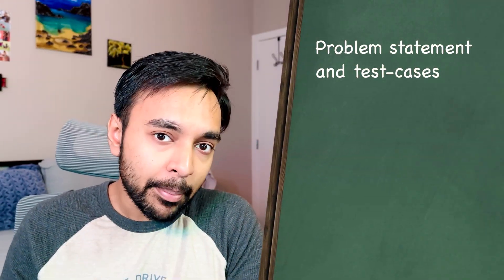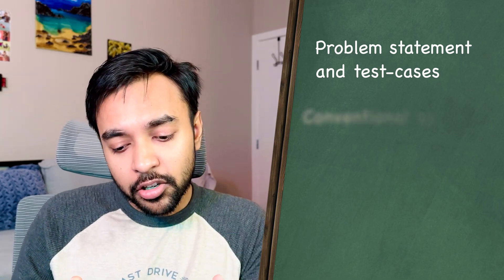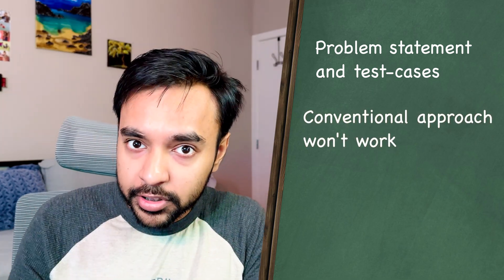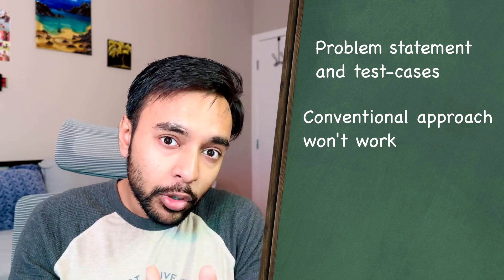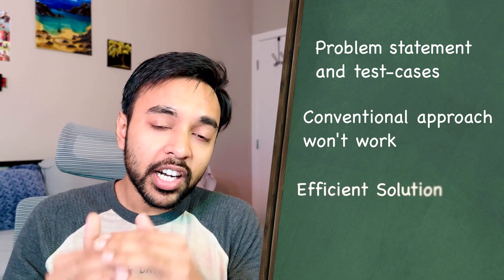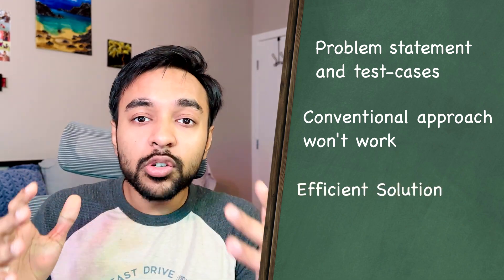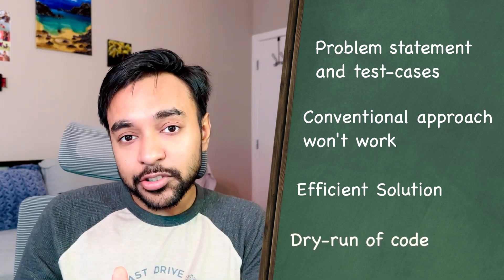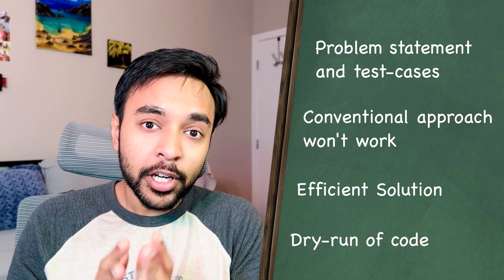Hello friends, welcome back to my channel. First, I will explain the problem statement and we will look at some sample test cases. Next, we are going to see why a conventional approach will not work for this question, and how you need to take into account different kinds of tree traversals to arrive at an efficient solution. And then, as usual, we will also do a dry run of the code so that you can understand and visualize how all of this works in action. Without further ado, let's get started.